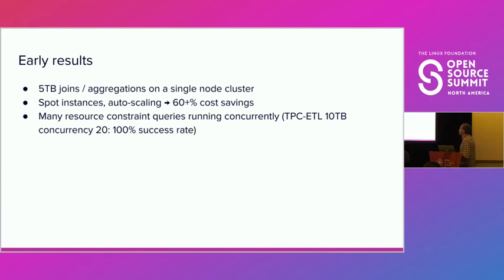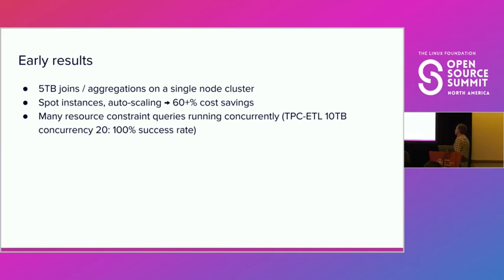For early results: we were able to run queries that would require five terabytes of memory with streaming execution on a single-node cluster with fault-tolerant execution. Community members experimented with Spot instances and CPU-based autoscaling in Kubernetes, with one company reporting more than 60% in cost savings. We also tested under high concurrency — TPC-H 10 terabyte dataset with 20 queries running concurrently on a five-node cluster — and it always succeeds, never runs out of memory, and prioritizes resources in a fair way.